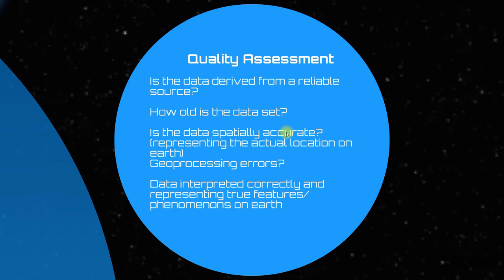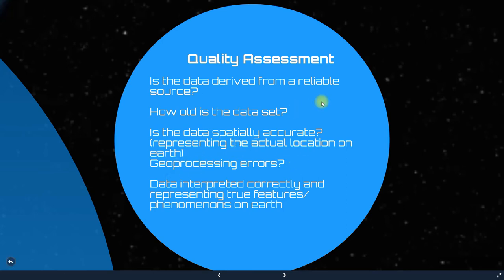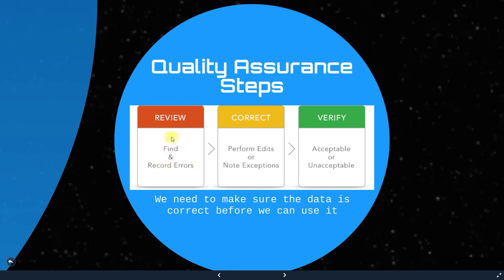We perform quality assessment through various questions: Is the data derived from a reliable source? How old is the dataset? Is the data spatially accurate? Are there any geoprocessing errors? Is the data interpreted correctly and representing true features of the Earth? The quality assurance steps are: review — find and record errors; perform edits or note exceptions; and verify — acceptable or unacceptable.